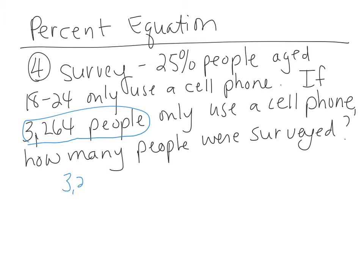3,264 total people were surveyed, and that's 25% of what number? We're going to call that number X. Let's put this into a decimal: 3,264 equals 0.25X.